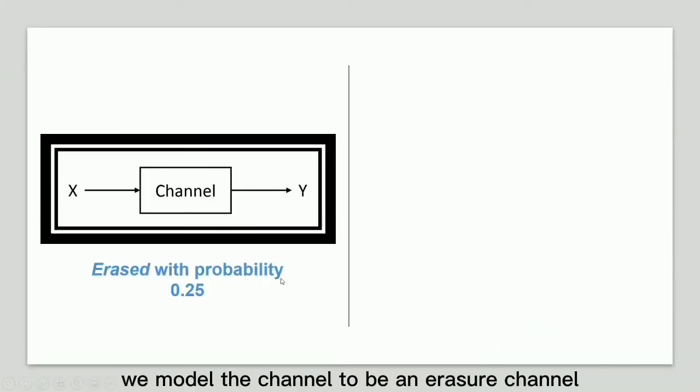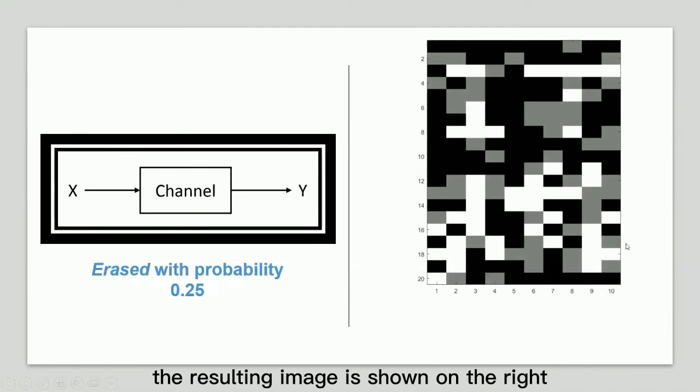We model the channel to be an erasure channel where each bit is erased with probability 0.25 when transmitting over this channel. The resulting image is shown on the right. Instead of the original black-white image,